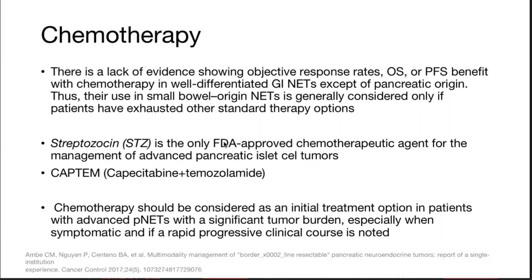Chemotherapy is not very promising, with few trials available. Streptozocin is the only FDA-approved chemotherapeutic agent; CAPTEM — capecitabine and temozolomide — can be used for palliation. This should be considered as initial treatment in patients with advanced tumors with significant tumor burden, especially when symptomatic and if a rapid progressive clinical course is noted.